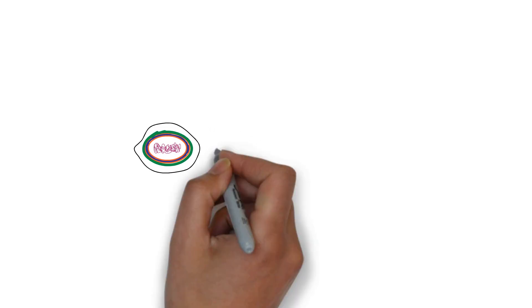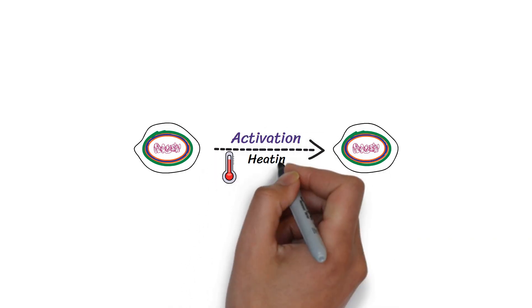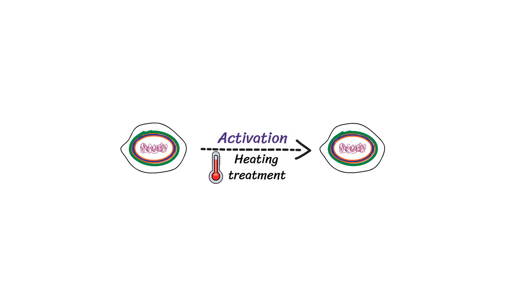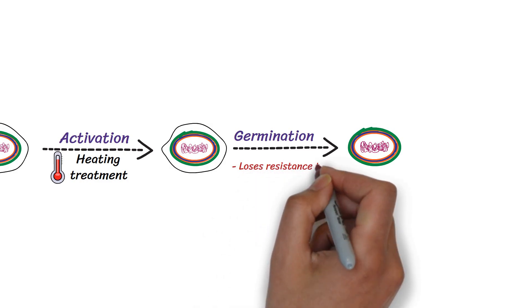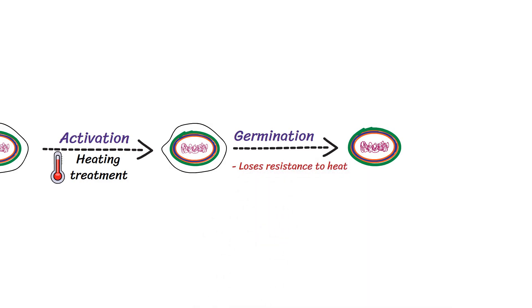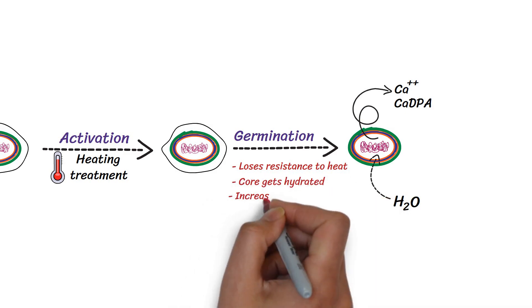The spore will not germinate on its own, even when it is put in a nutrient-rich medium. The activation process usually requires a heating treatment. The activation of the spore is followed by germination. In this stage, the spore loses its resistance to heat and other harmful factors. The calcium and dipicolinic acid will be released from the core. As a result, the core gets hydrated, and there will be an increased metabolic activity.